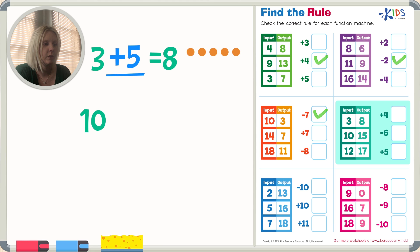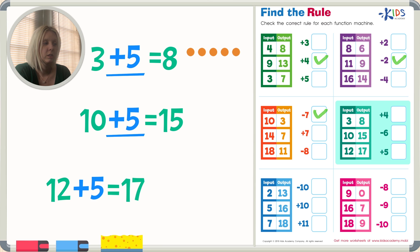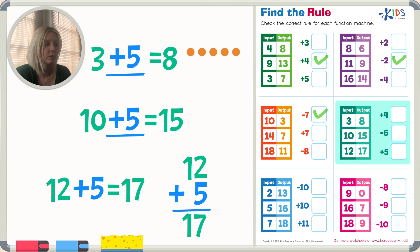10 plus something should equal 15. I think it's 5, and I already know because I can count by 5's: 5, 10, 15, 20. So 10 plus 5 is 15 — that's correct. What about 12 plus 5 equals 17? Adding it up: 5, 6, 7 and then 1 more is 17. So that's right. The rule for this function machine is plus 5.